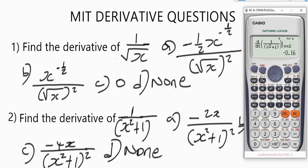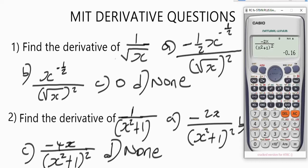Anyone that gives us minus 0.16 will be the answer. Let's evaluate option A, which is minus 2x over (x² + 1) squared. Entering this with Alpha X for x and closing the brackets, we press equals and get minus 0.16 — correct! So the answer to question two is also option A. This is basically how you can solve problems involving derivatives or differentiation with the Casio calculator.